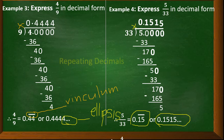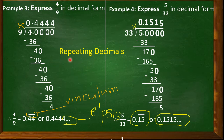So this is our answer. Examples 3 and 4 are repeating decimals — in one, 4 is being repeated, and in the other, 1 and 5 are being repeated.